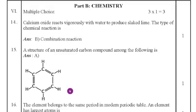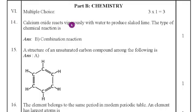The next part is Part B — Chemistry. Fourteenth question: calcium oxide reacts vigorously with water to produce slaked lime. The type of this reaction is a combination reaction. Option B is the right answer. Fifteenth question: the structure of an unsaturated carbon compound among the following — the answer is benzene. Option A is the right answer.